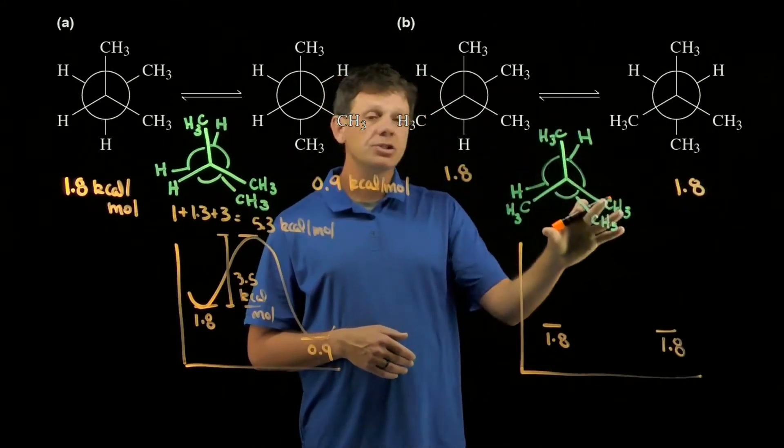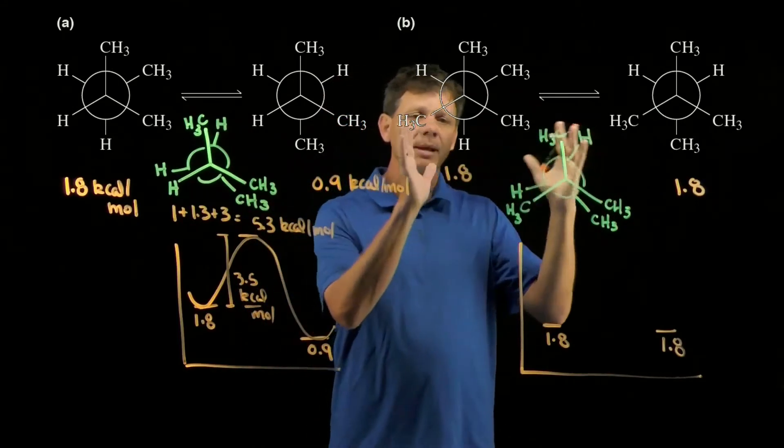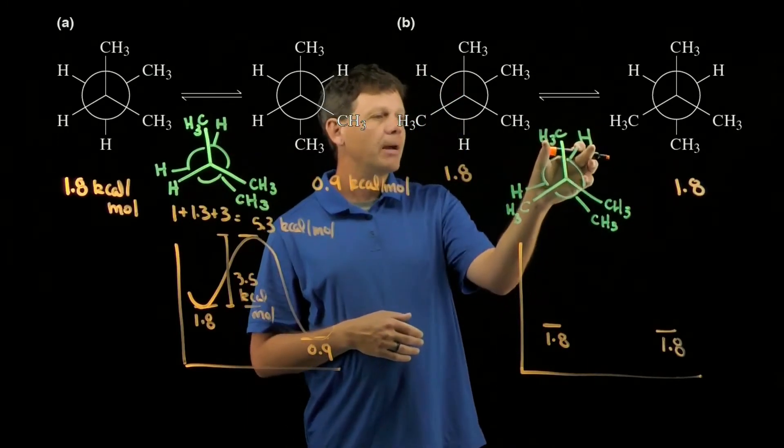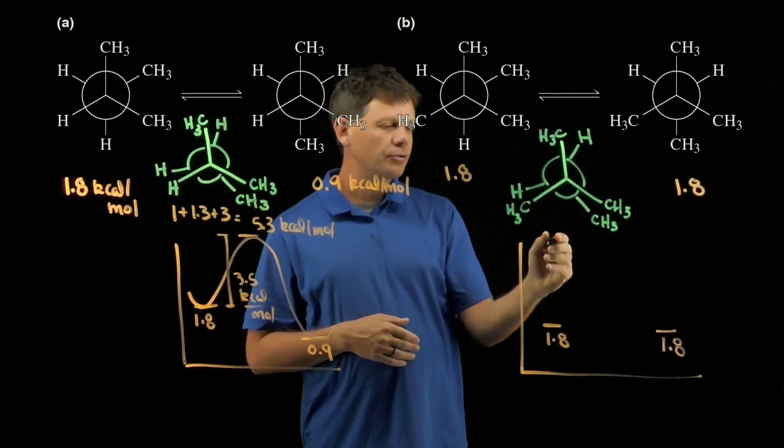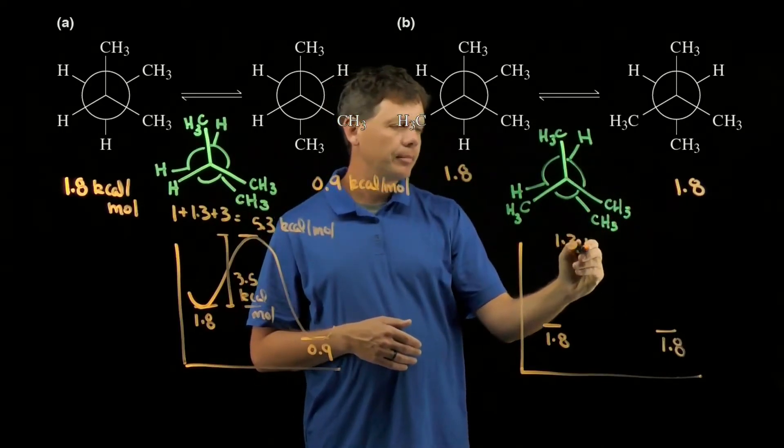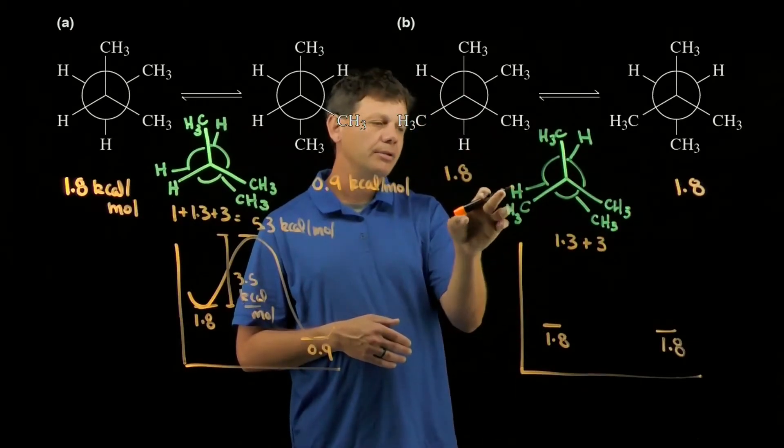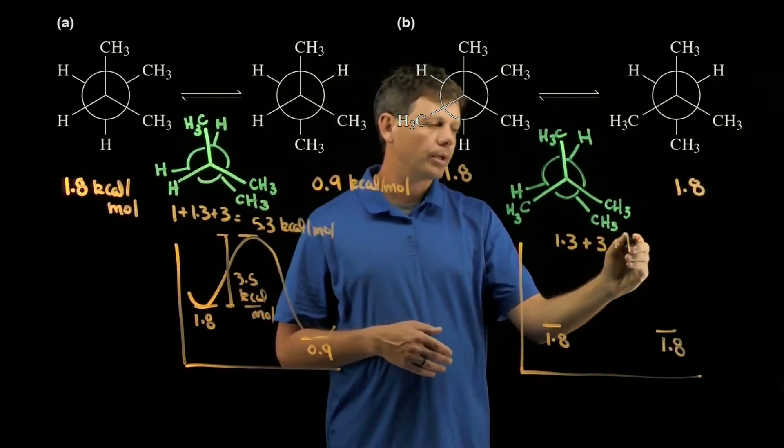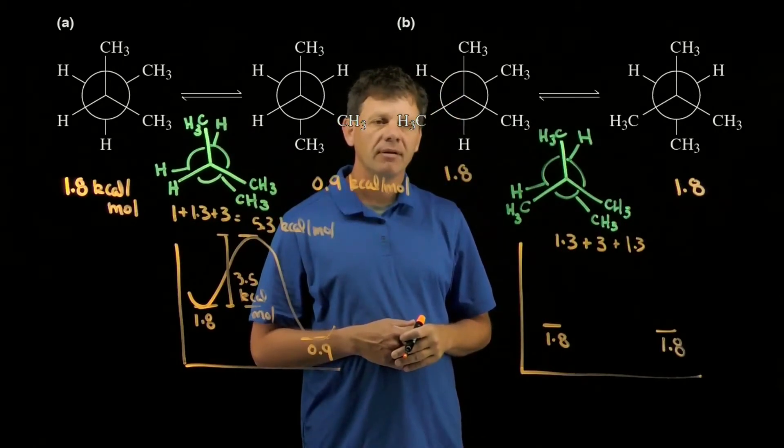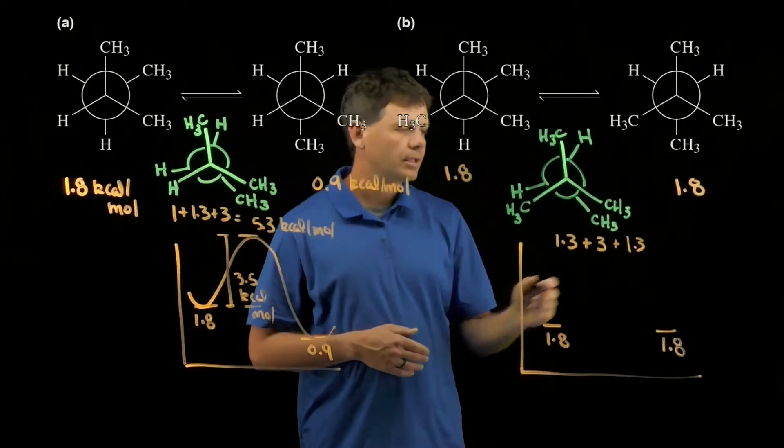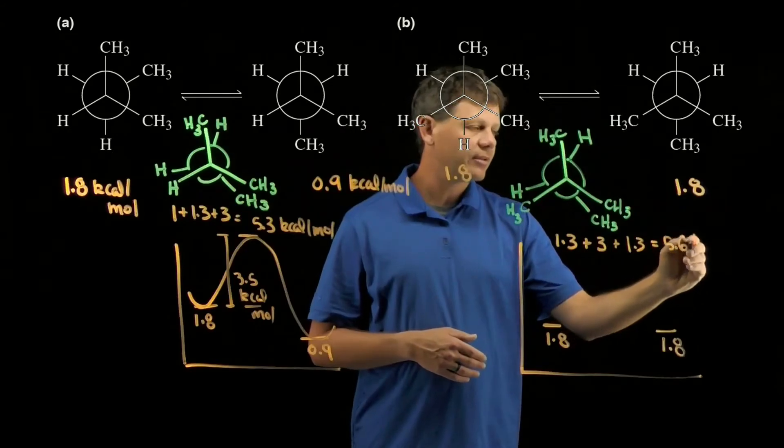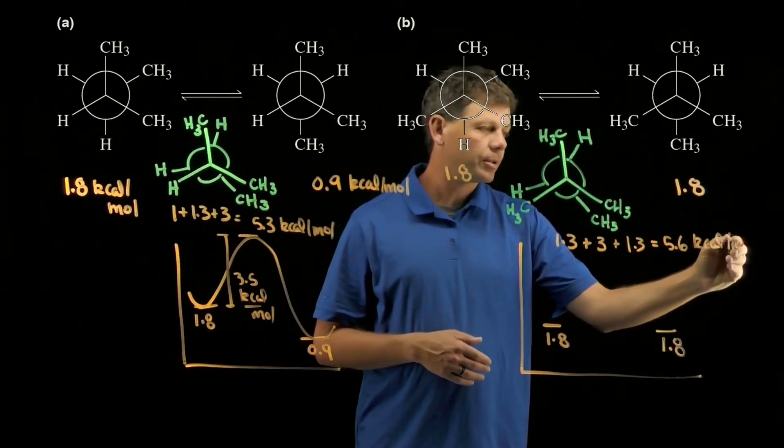Calculating the energy of our transition state—our eclipsed conformation that is halfway between the two staggered. The methyl-hydrogen interaction is worth 1.3, this methyl-methyl is worth 3, this methyl-hydrogen is worth 1.3. Add those up, we get a total of 5.6 kilocalories per mole. 1.3 plus 1.3 plus 3 is 5.6 kilocalories per mole.